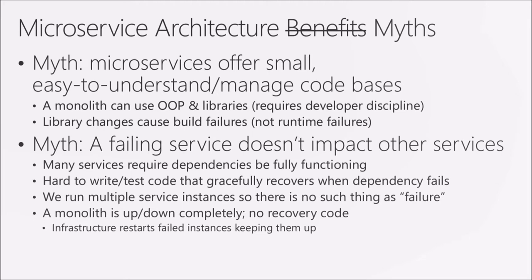As for running multiple service instances so there's no such thing as failure — in cloud environments like Service Fabric, you usually have multiple instances of a microservice running. If one instance fails, the system will restart that service. There are multiple instances, so network requests can go to an instance that's up instead of the one that's down. With a monolithic architecture, all components are either up or down at the same time, so you don't have to worry about recovery code for partial failures.